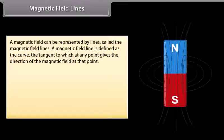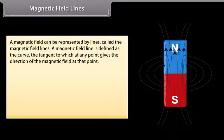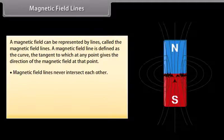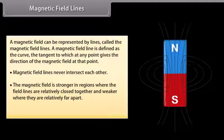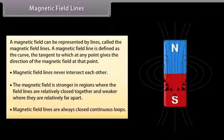A magnetic field can be represented by lines called magnetic field lines. A magnetic field line is defined as the curve, the tangent to which at any point gives the direction of the magnetic field at that point. Magnetic field lines never intersect each other. The magnetic field is stronger in regions where the field lines are relatively close together and weaker where they are relatively far apart. Magnetic field lines are always closed continuous loops.